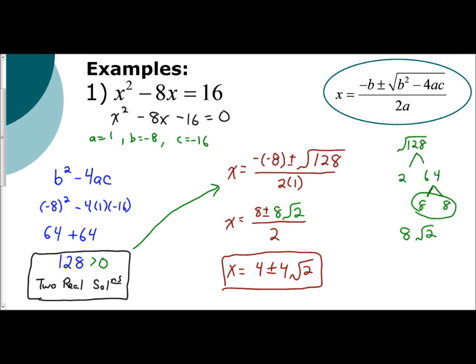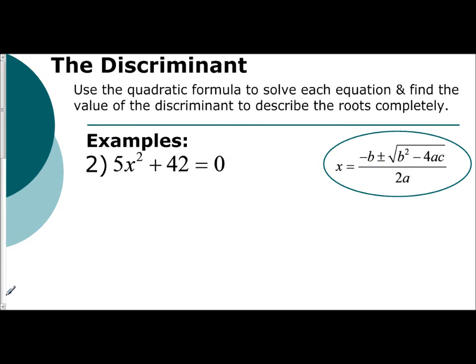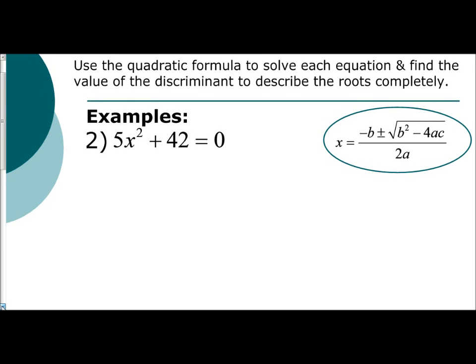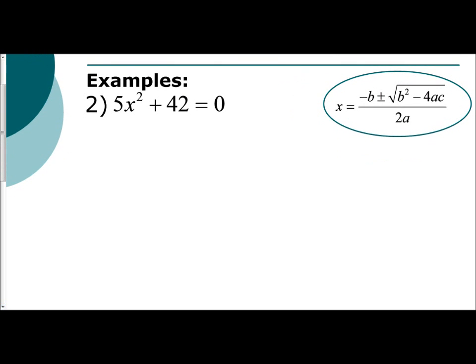So let's take a look at example number 2. You have 5x squared plus 42 equals 0. So I'm going to jump right to it is equal to 0, identifying by a, b, and c. a is the coefficient of your quadratic term, so it's 5. c is the constant, so it's 42. b is the coefficient for the linear term, the one with just an x. And there's no linear term there, so we use 0.